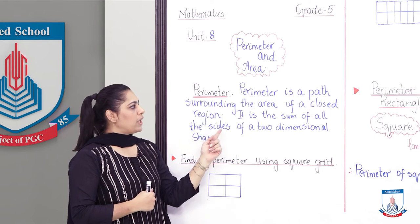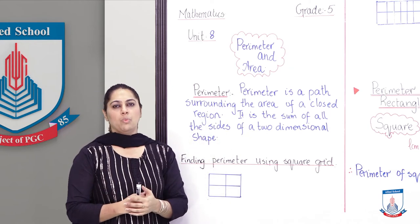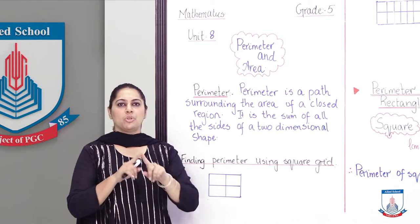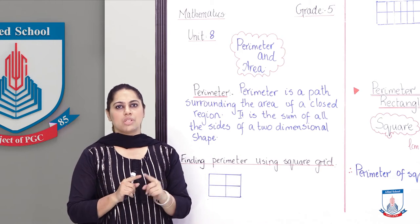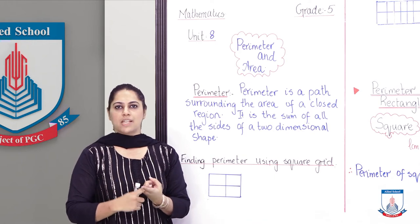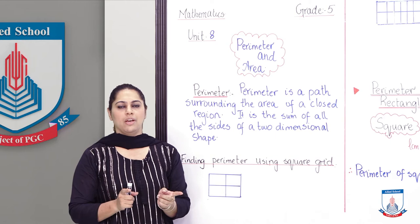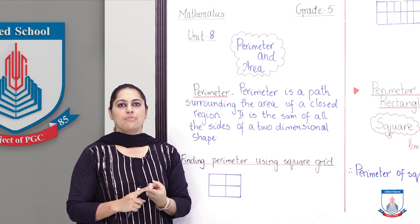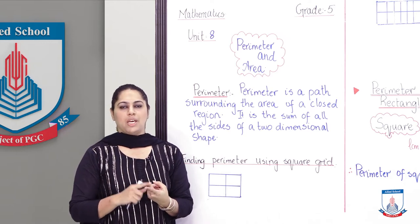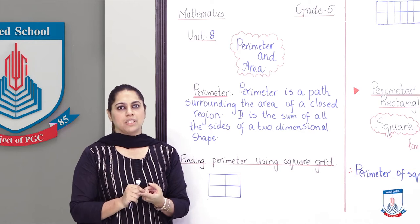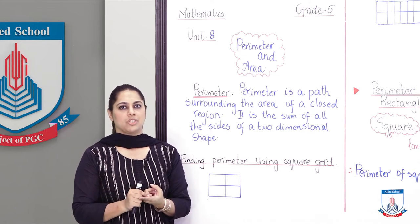Perimeter is a path surrounding the area of a closed shape. What do you understand by the word closed shape? The shape which is closed on four sides, we call it closed shape. Like your circle, square, rectangle, these all are closed shapes. And the boundaries which are called perimeter. We find out two ways, we call it boundaries, we call it length and add up.